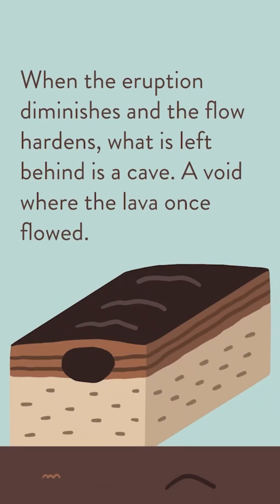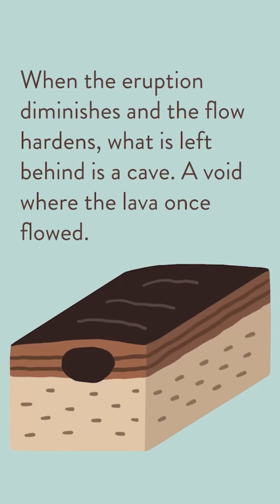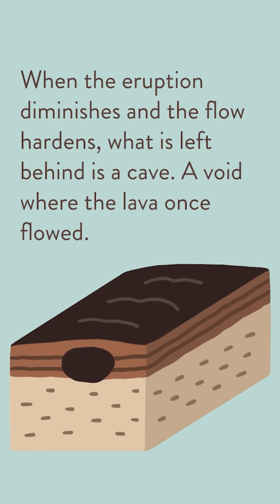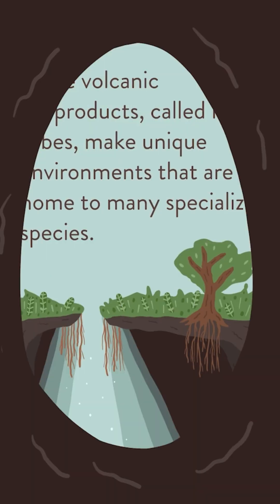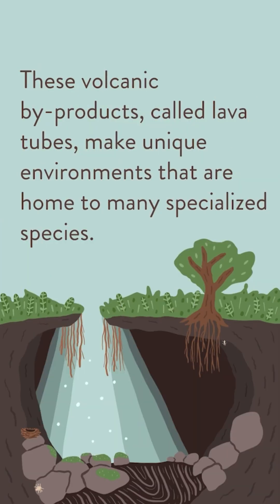When the eruption diminishes and the flow hardens, what is left behind is a cave — a void where the lava once flowed. These volcanic byproducts, called lava tubes, make unique environments that are home to many specialized species.